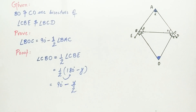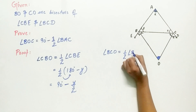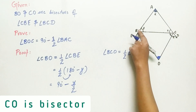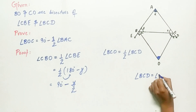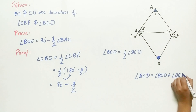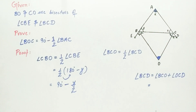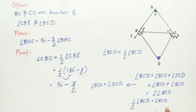Similarly, angle BCO equals half of angle BCD. Why? Because CO is the bisector of angle BCD. Angle BCD equals angle BCO plus angle OCD. Since a bisector divides an angle into two equal parts, angle BCO equals angle OCD. Therefore, angle BCO plus angle BCO equals twice of angle BCO, which equals angle BCD. Hence, angle BCO equals half of angle BCD.